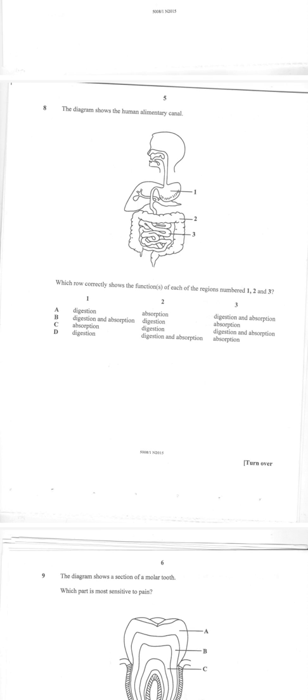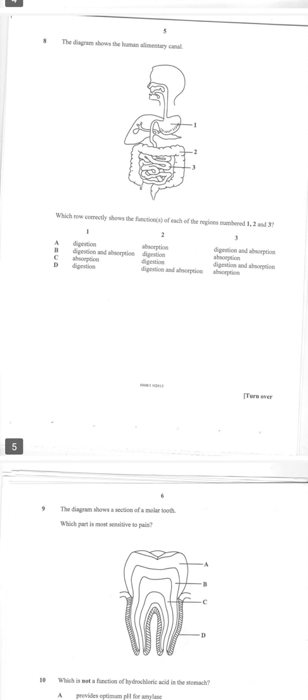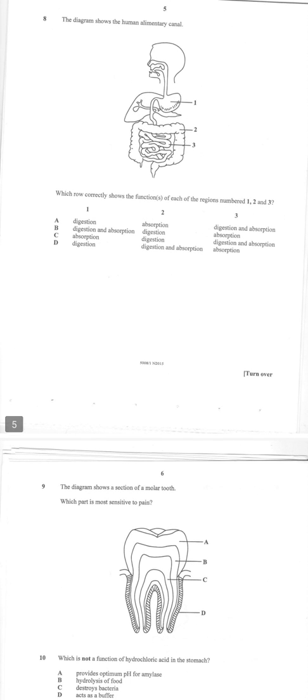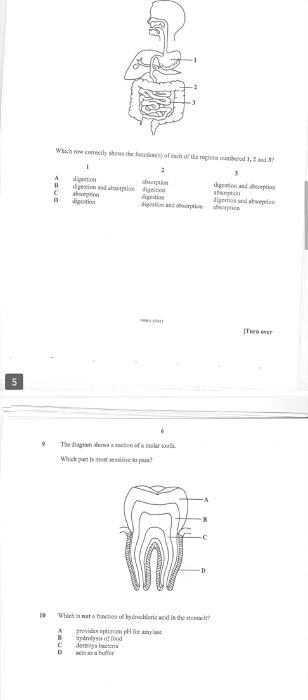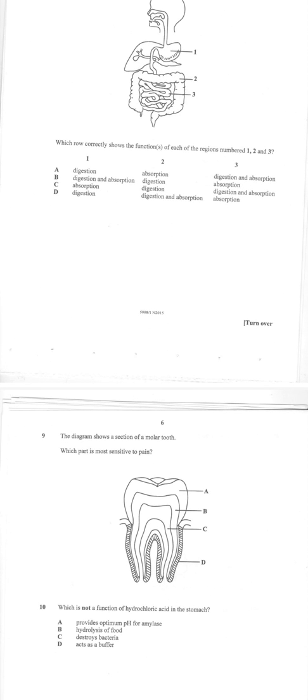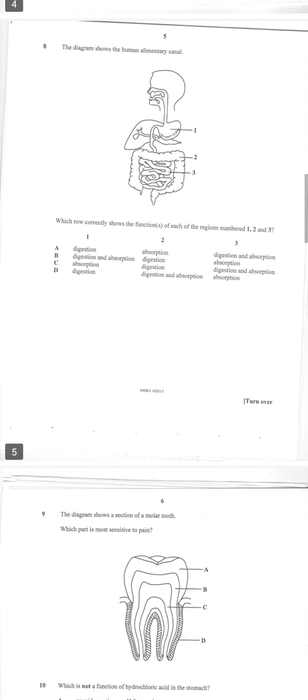Number seven is B. And then number eight: the diagram shows the human alimentary canal. The question then says which role correctly shows the functions of each of the regions. Number one is the stomach, there is digestion in the stomach. Number two is the large intestines, there is absorption in the large intestines. Number three is the small intestine: digestion and absorption. So question eight, our answer is A.